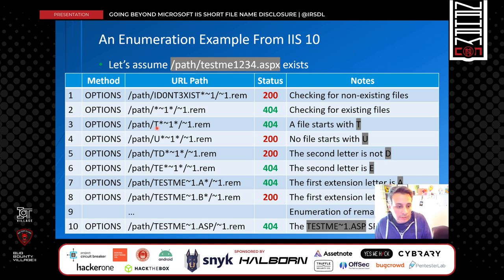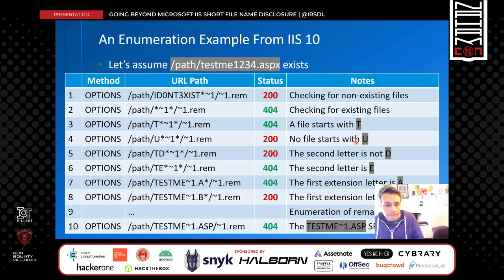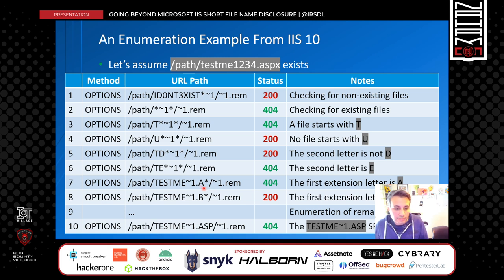We can then enumerate the filename character by character. We put a letter in to see if we get a 404 or 200 from the server. Using the letter T, we get a 404 — meaning the filename starts with T. Using U, we get 200 — no short filename with ~1 starts with U. We then enumerate the second letter: D gives 200 (not the second letter), E gives 404 (it is E). We can enumerate the full filename this way, and for the extension it is very similar, until we find the complete short filename.